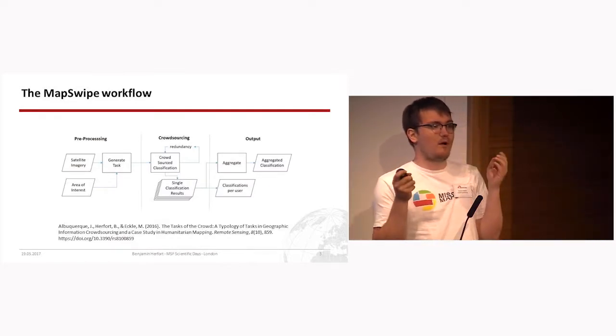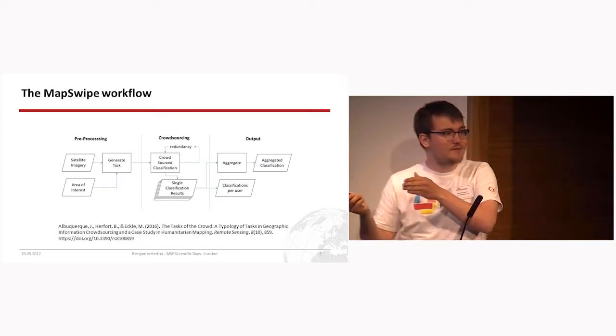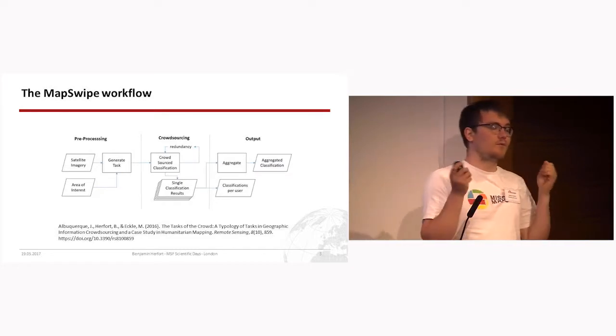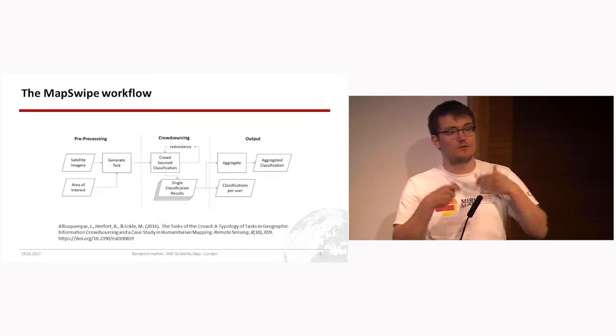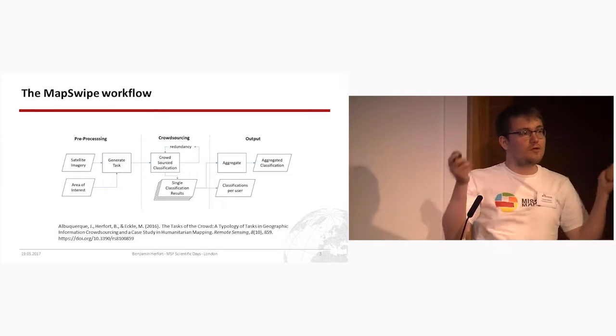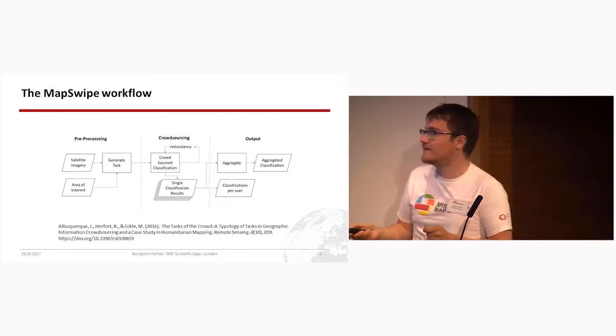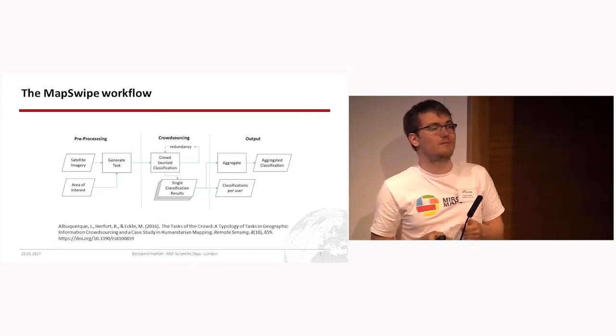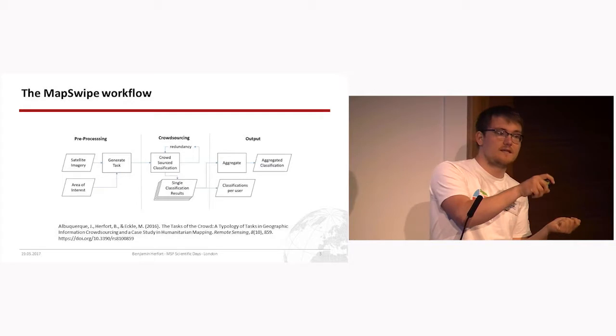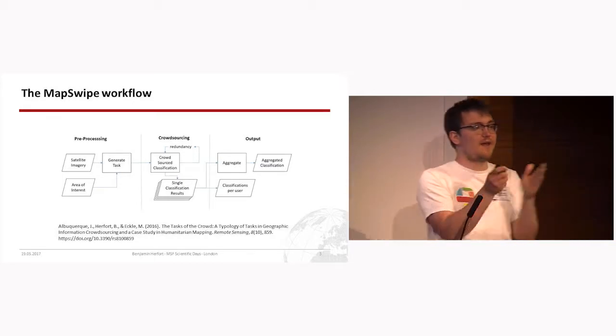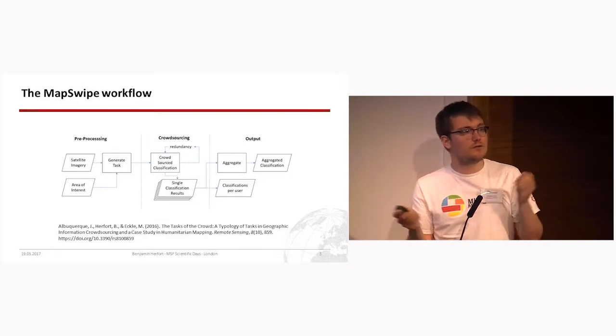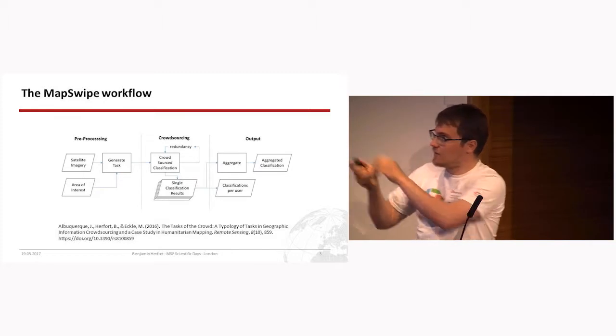So why are we doing this? We had the problem of how to find all these buildings in huge areas that are also sparsely populated. Scanning through areas where there are no buildings, to do this faster we tried out the MapSwipe approach. We have a huge area of interest, generate these tiny little tasks, and then have this crowdsourcing approach where every task will be evaluated by many people. At the moment we have at least three different people looking at everything. In the end we can aggregate everything and derive a settlement layer. That's the goal and that's the workflow here.